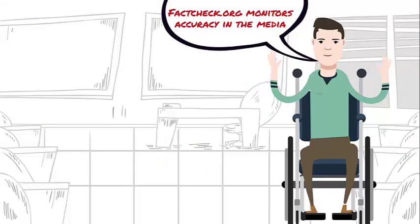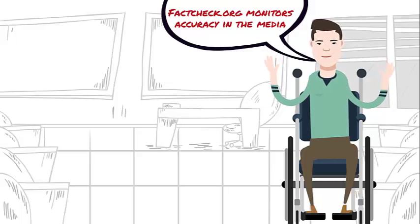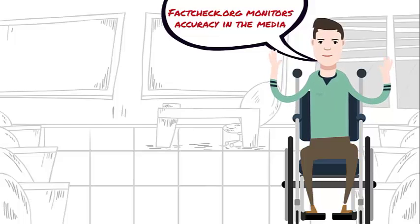Some reliable fact-checking websites are factcheck.org. This nonpartisan nonprofit project of the Annenberg Public Policy Center of the University of Pennsylvania monitors the factual accuracy of what is said by U.S. political players, including politicians, TV ads, debates, interviews, and news releases.